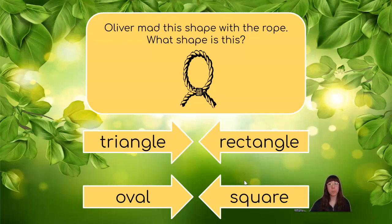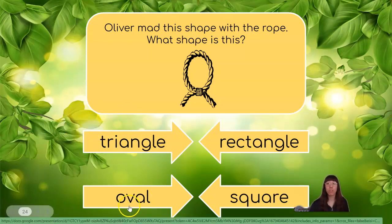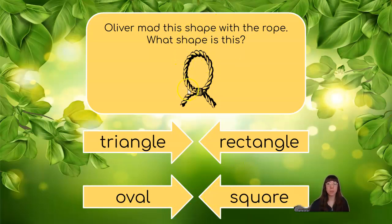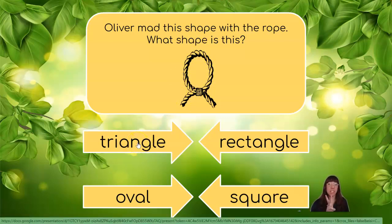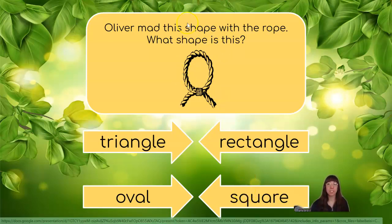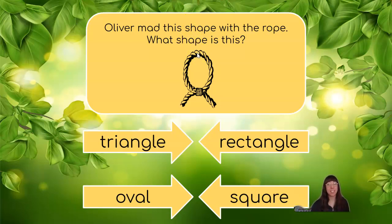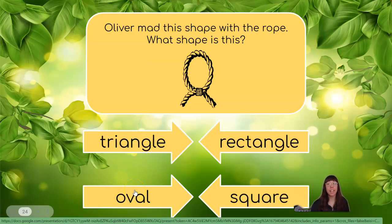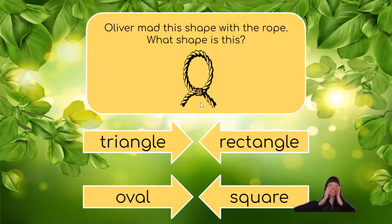Oliver made this shape with the rope. Which shape is this? Our choices are triangle, rectangle, oval, or square. This shape doesn't look like it has any sides or any corners. A triangle has three sides and three corners, so this can't be a triangle. A rectangle has four sides and four corners — that's more than what this shape has. A square has four equal sides and four equal corners, so it's not a square. Our last choice is oval. An oval has zero sides and zero corners, and it looks like a squished circle. That means that this shape is an oval.